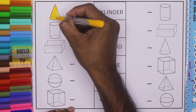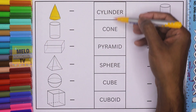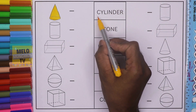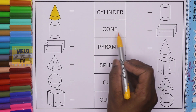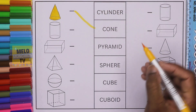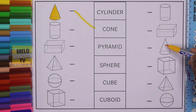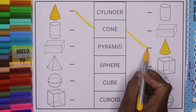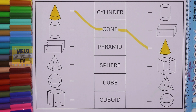Now I need to find the name from the list. C-Y-L-I-N-D-E-R — this is cylinder. Next one is C-O-N-E — cone. So let's join the cone first, like this. From the right hand side we need to find out the cone — check, this one! Let's color it and join the cone, okay, like this.